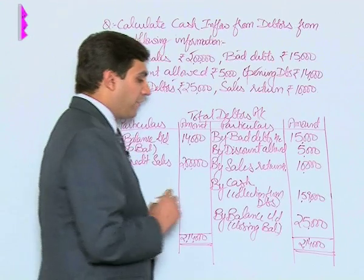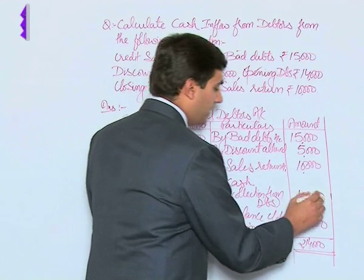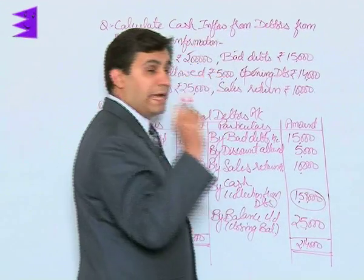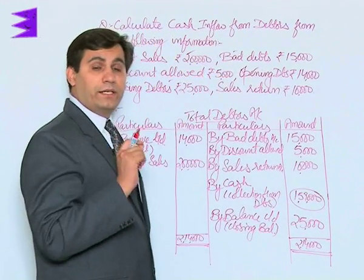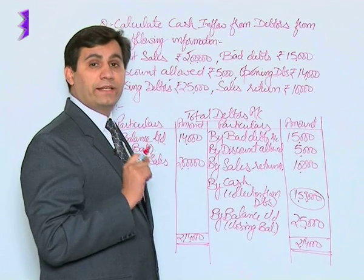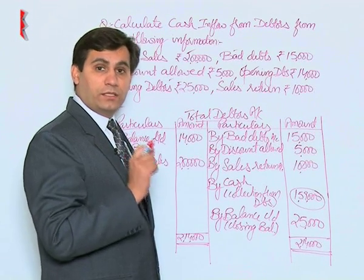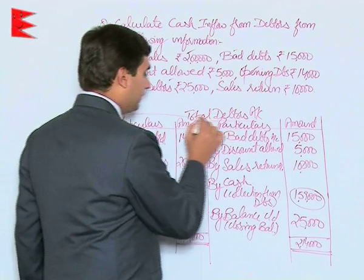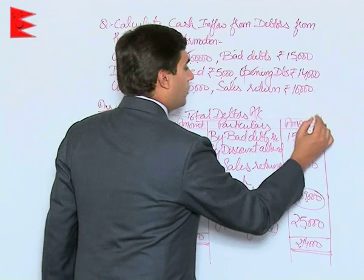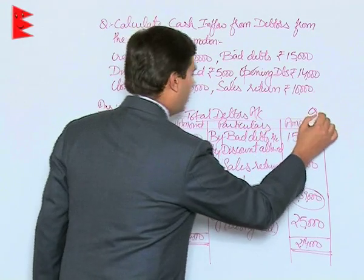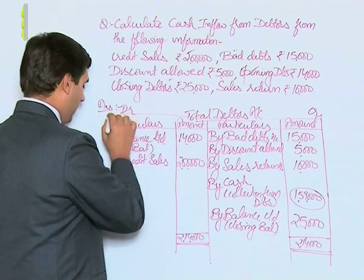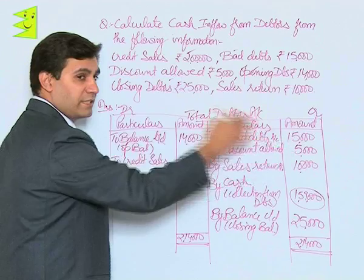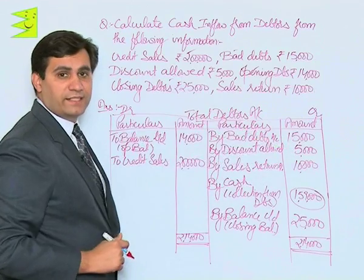Remember, this 1,59,000 is the balancing figure and represents the amount of cash collected from debtors during the year. Also remember to correctly label the debit and credit sides when preparing this account.